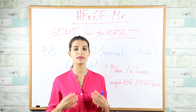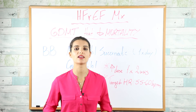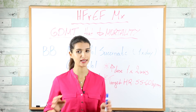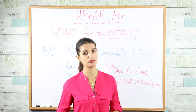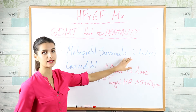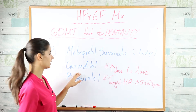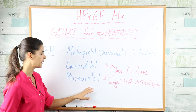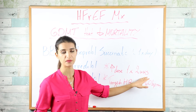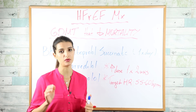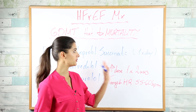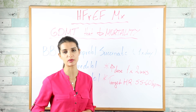Beta blockers have proven mortality benefit — the higher the dose, the higher the benefit. Only three have proven mortality benefit: metoprolol succinate (extended release, once daily), carvedilol, and bisoprolol. Increase the dose over at least two weeks — unlike ACE inhibitors which can be increased daily. Target heart rate when using beta blockers is 55–60 beats per minute.